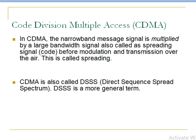In CDMA, the narrowband message signal is multiplied by a large bandwidth signal, also called the spreading signal, and this is done before modulation and transmission over the air. CDMA is also called Direct Sequence Spread Spectrum (DSSS). DSSS is a more general term, while CDMA is a more particular term. In CDMA, we multiply our narrowband message signal by a large bandwidth signal.